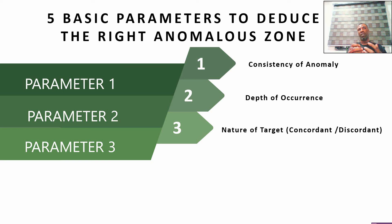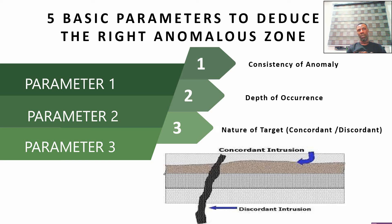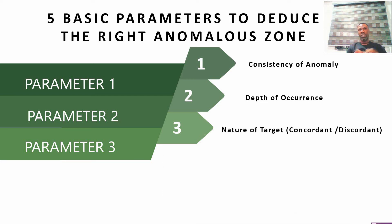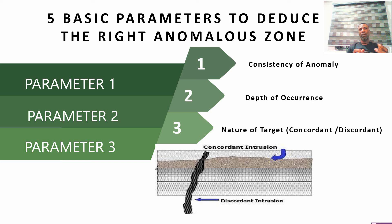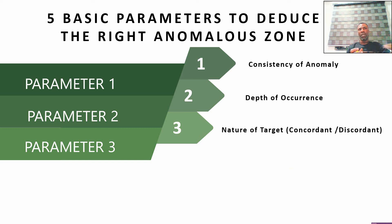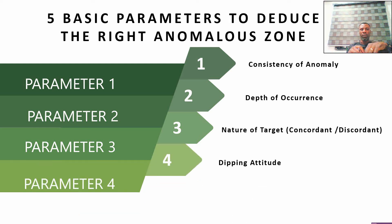Parameter three is the nature of the target — is the body concordant or discordant, like a dyke? You need to look at the shape of that particular anomaly. If you are looking for a discordant body, you should see how it appears in the section. In this example I'm going to show, what I'm looking at is discordant, so I'm not interested in something that is concordant with the actual formation.